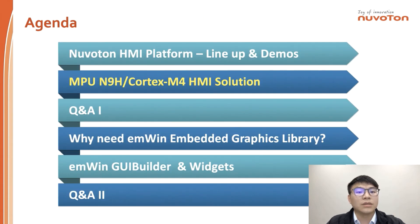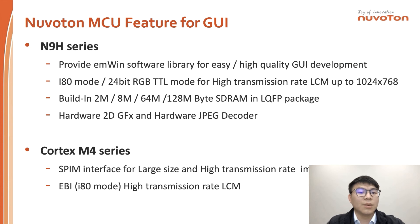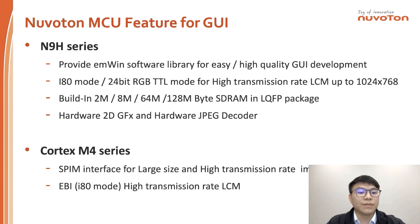This is our second agenda: the Nuvoton N9H Cortex-A9 HMI solution. The N9H series provides the EMWIN software library for easy, high-quality GUI development, and supports I80 mode and 24-bit RGB TTL mode for high transmission rate. It supports LCM resolutions up to 1024x768, built-in SRAM from 2 MB to 128 MB in LQFP package, hardware 2D accelerator and hardware JPEG decoder. Additionally, the Cortex-M4 series uses an SPI interface for large-size and high-transmission-rate image storage, and an EBI I80 interface for high transmission rate LCM.